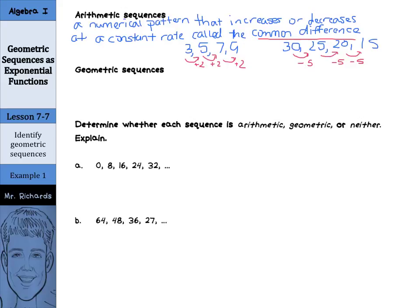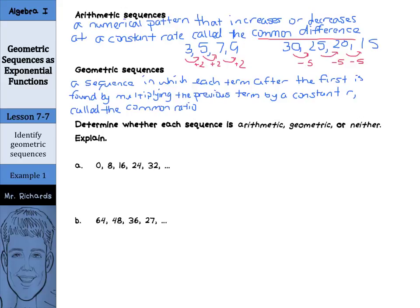How does that compare to geometric sequences? A geometric sequence is a sequence in which each term after the first is found by multiplying the previous term by a constant r called the common ratio. With our sequence 3, 6, 12, 24, you can see where each term is being multiplied by 2 to get to the next term.